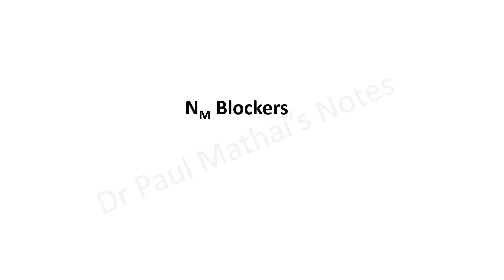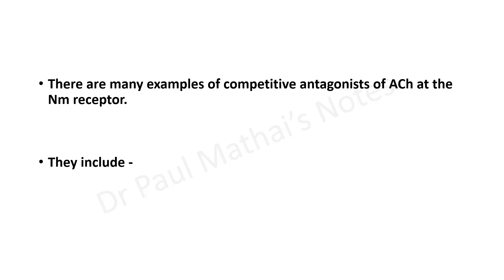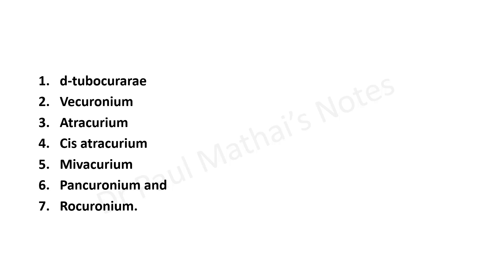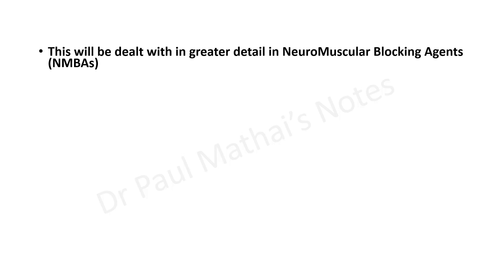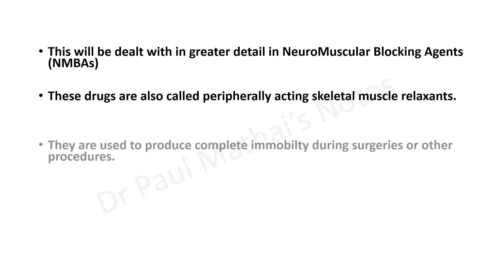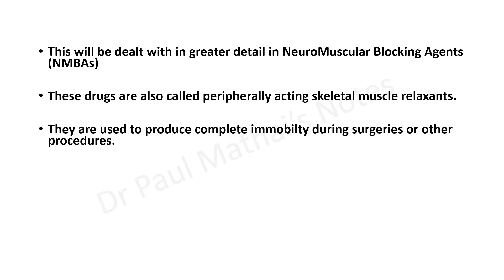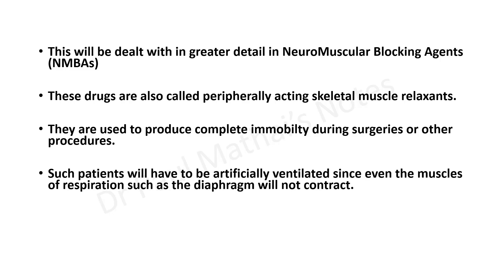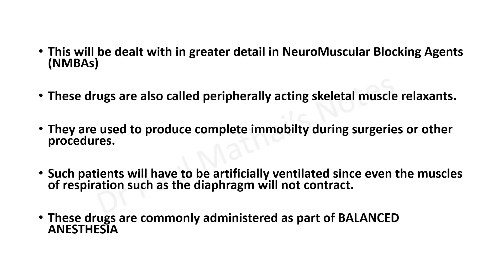The nicotinic NM blockers include d-tubocurarine, vecuronium, atracurium, cisatracurium, mivacurium, pancuronium, and rocuronium. These will be discussed in greater detail under neuromuscular blocking agents (peripherally acting skeletal muscle relaxants). They are used to produce complete immobility during surgeries or unpleasant procedures; such patients cannot move most muscles including the diaphragm and must be artificially ventilated. They are commonly administered as part of balanced anesthesia.